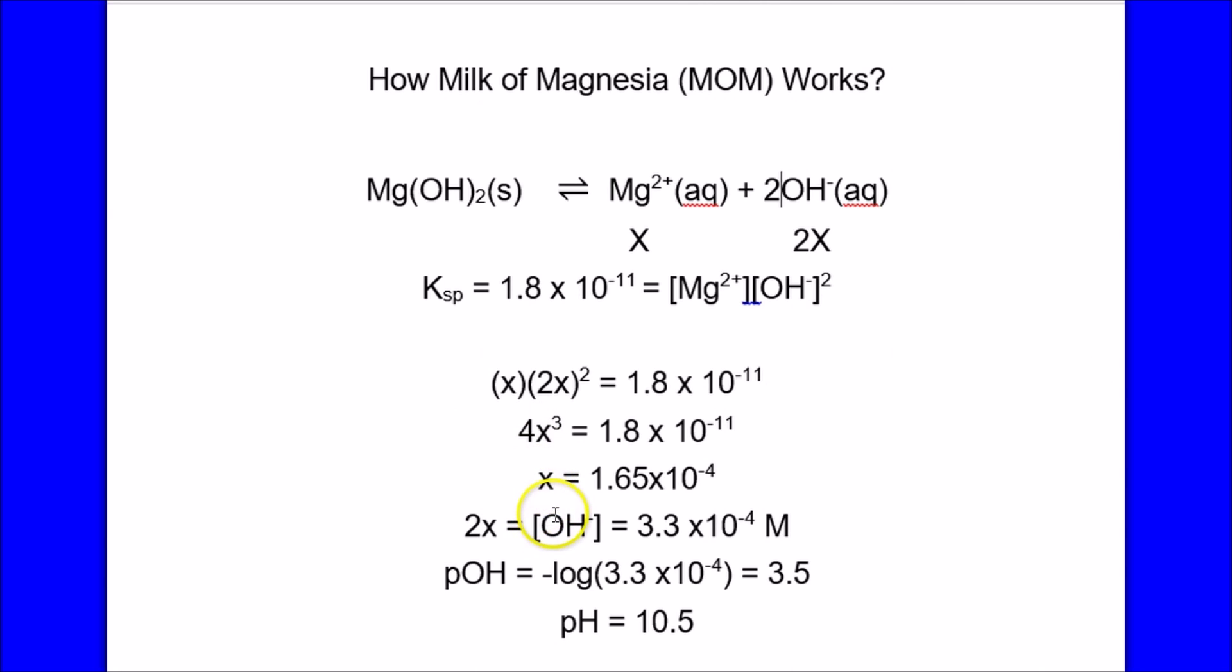Solving for x, we get the magnesium ion concentration is x. The hydroxide is 2x. We can get the pOH and then the pH. So the pH is 10.5, slightly basic solution.